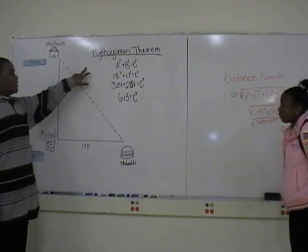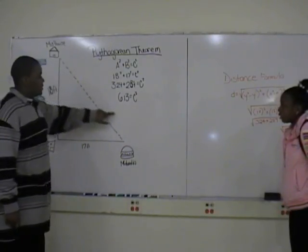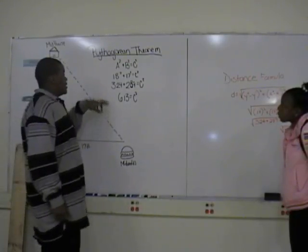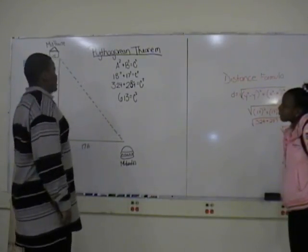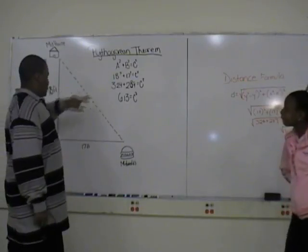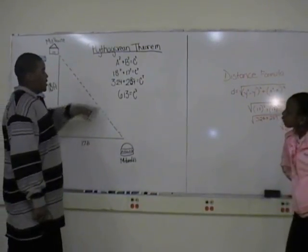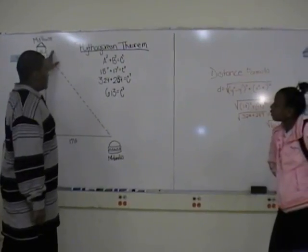So if we use Pythagorean theorem, we can figure out the distance of the hypotenuse. A squared would be 18 feet squared, and B squared would be 17 feet squared, and it would give us C squared, which is the distance of this line.